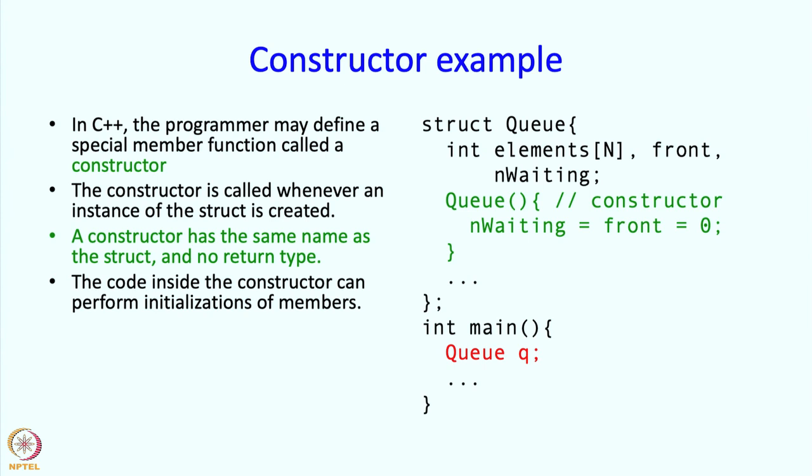The code inside the constructor is expected to perform initialization of the members. But of course it is any code, so you can make it do whatever you want. But its purpose really is, the notion of a constructor was created so as to enable initializations. It is the designer who is keeping track and saying that when you create you need to initialize. Therefore I will give you a way of making that happen automatically, and then the user just writes this and the initialization happens.